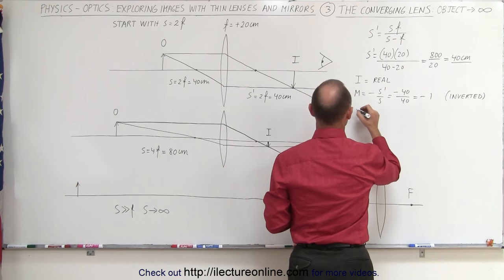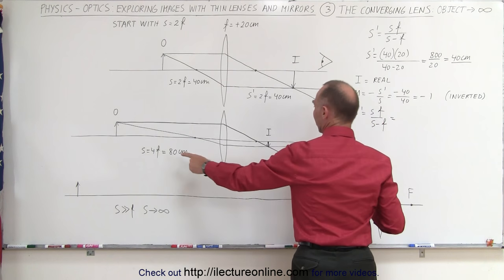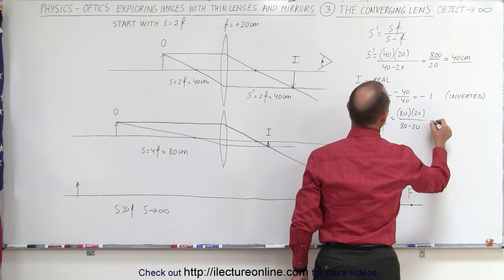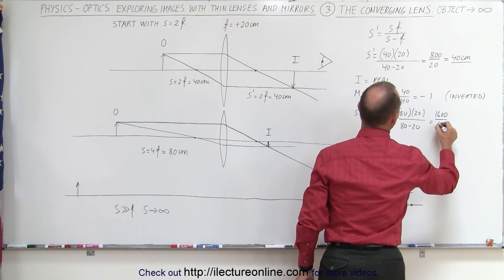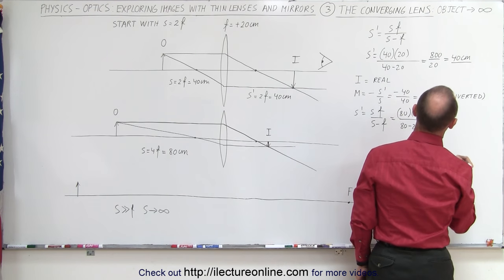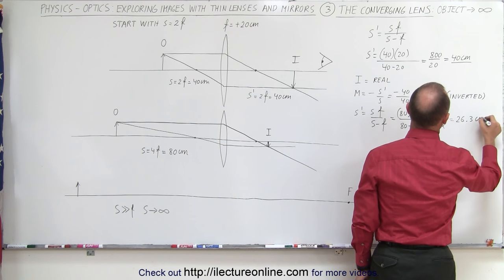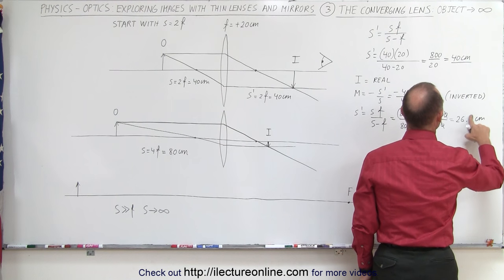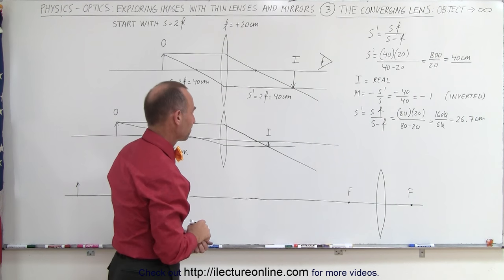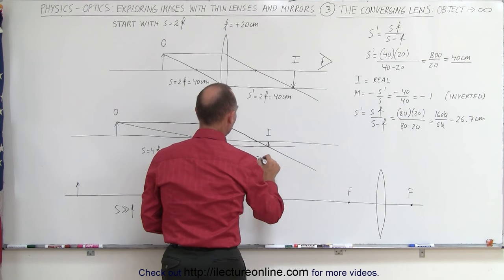Let's find the position of the image. S' equals SF over S minus F. S is now 80 centimeters, the focal length is 20 centimeters: 80 times 20 divided by 80 minus 20 equals 1600 divided by 60, which is 26.7 centimeters. So S' is equal to 26.7 centimeters — it's moved closer to the lens.